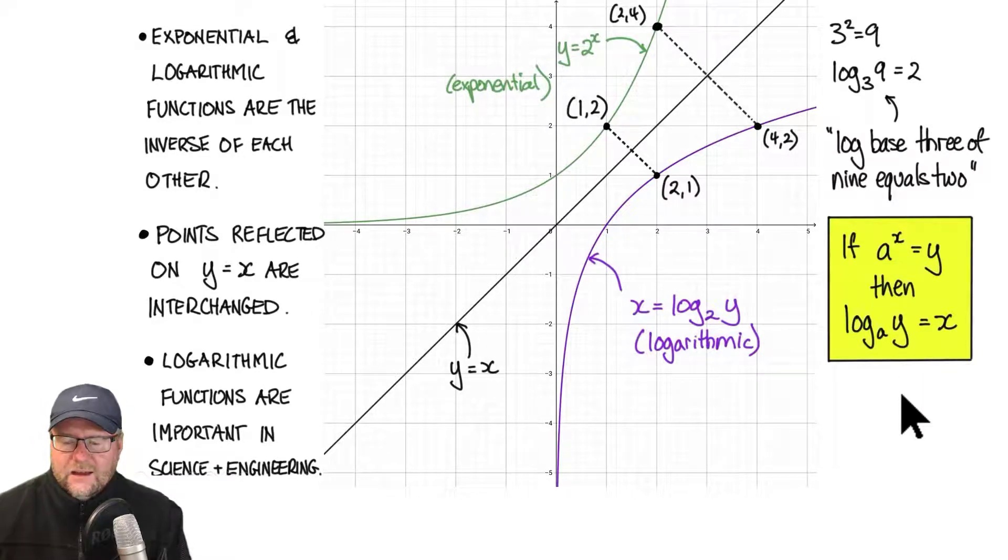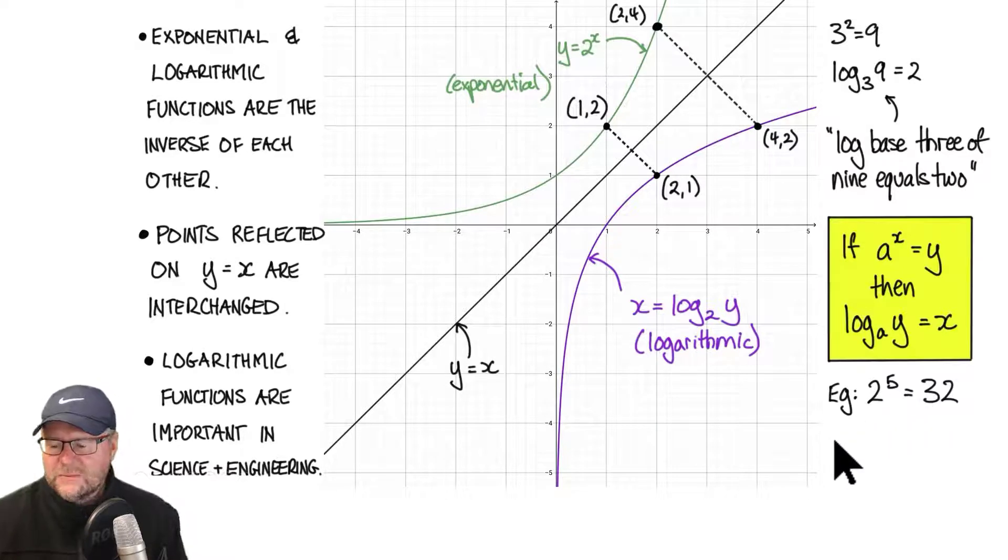Here is the formula or the map between the two. If I've got an exponential that has a base of a to the power of x equals y, then the logarithm for that is log base a of the y equals x. Let's put some actual numbers in there and play with a couple just to see, because it's not as confusing as it sounds.